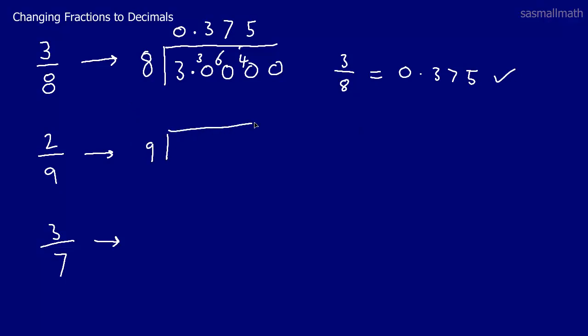9s into 2. 9 into 2. Won't go. 0. So there was nothing. Move the 2 across. 9s into 20. Goes twice. 2 9s are 18. Take the 18 from 20. 2.